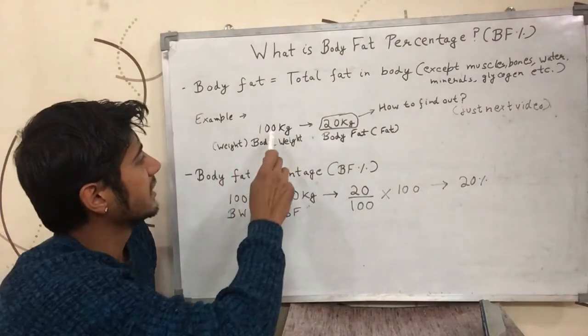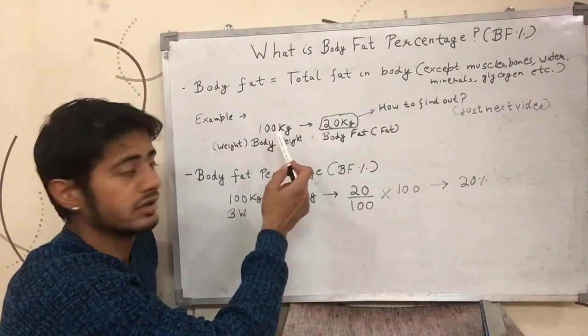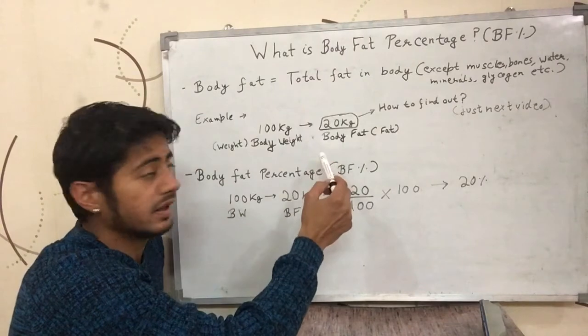Now let's say there is a 100kg guy whose body weight is 100kg and somehow we know that that guy has 20kg of body fat.